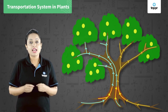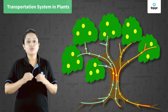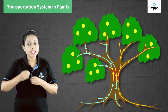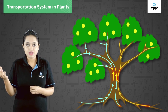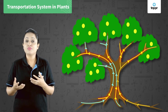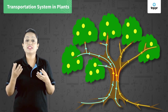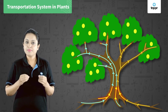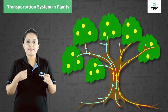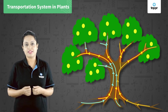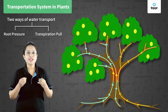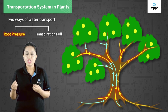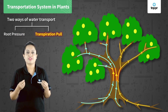Water has to move from the roots up to the leaves — that is, water has to move against gravity. So how does water move against gravity inside the xylem tissue? To move water up the xylem tissue, some pressure or suction is required. Plants do this by two ways: first by root pressure, or second by transpiration pull.